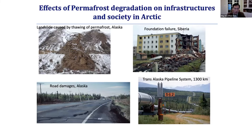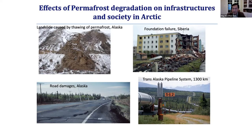Thawing permafrost can cause landslides, differential settlement, and in some cases foundation failure and building collapse, as seen in Siberia. Roads, if paved, often look like a roller coaster because of differential settlement. Also relevant is the 1,300-kilometer-long trans-Alaska pipeline system that takes oil from Prudhoe Bay all the way to Valdez, then transported to New Orleans and Texas. If the permafrost thaws, the pipeline could break.